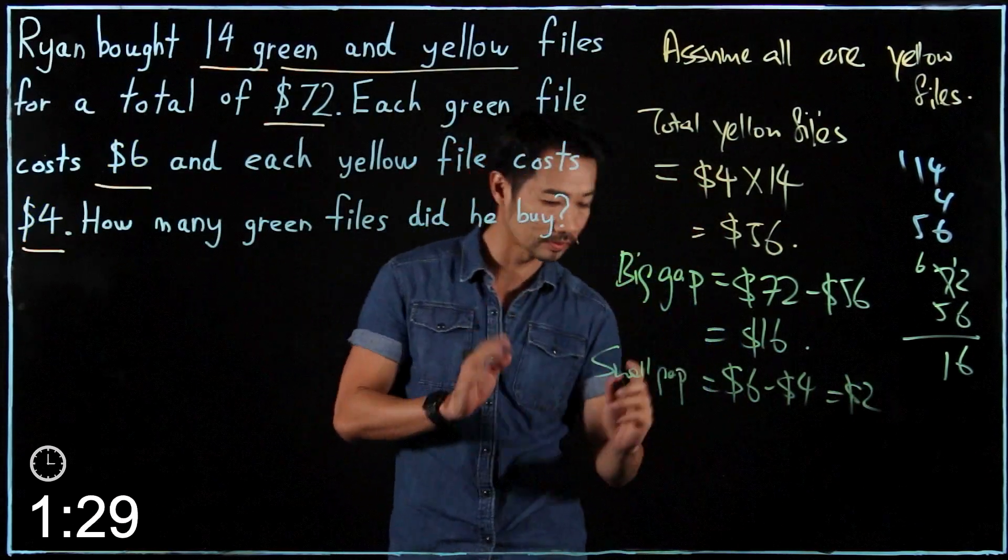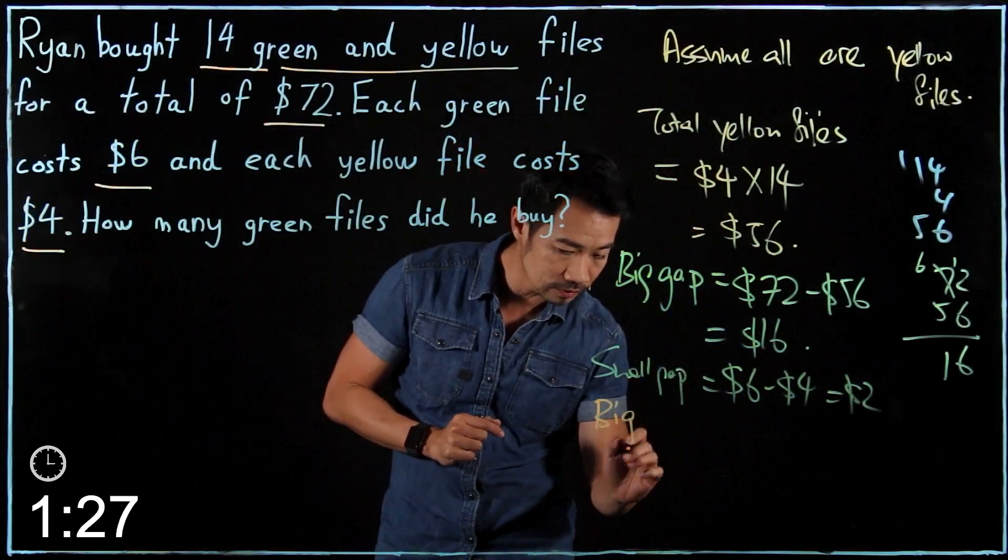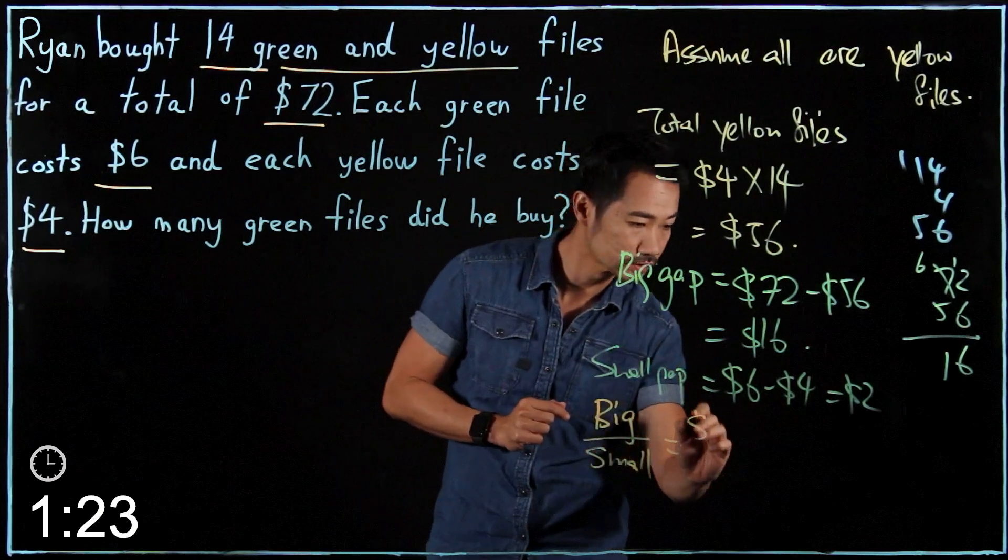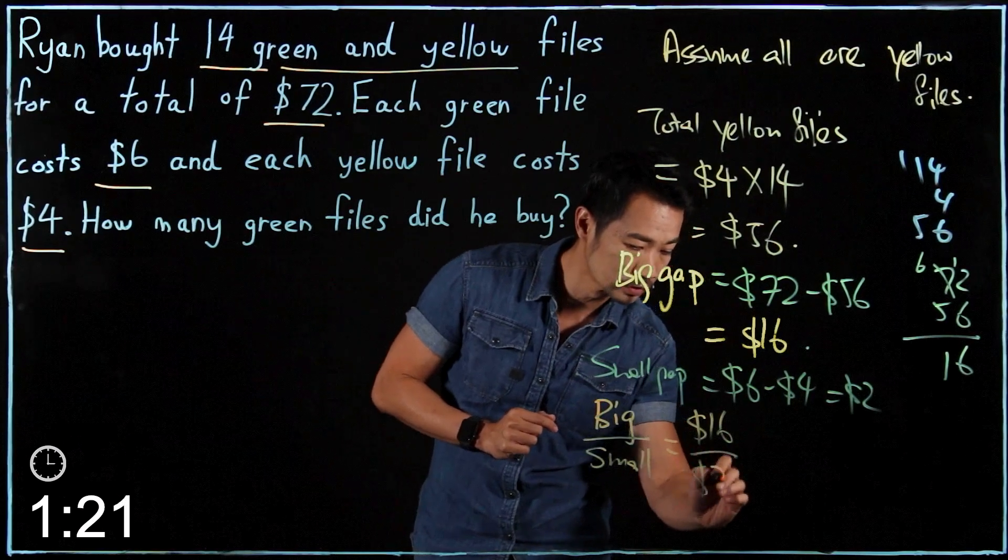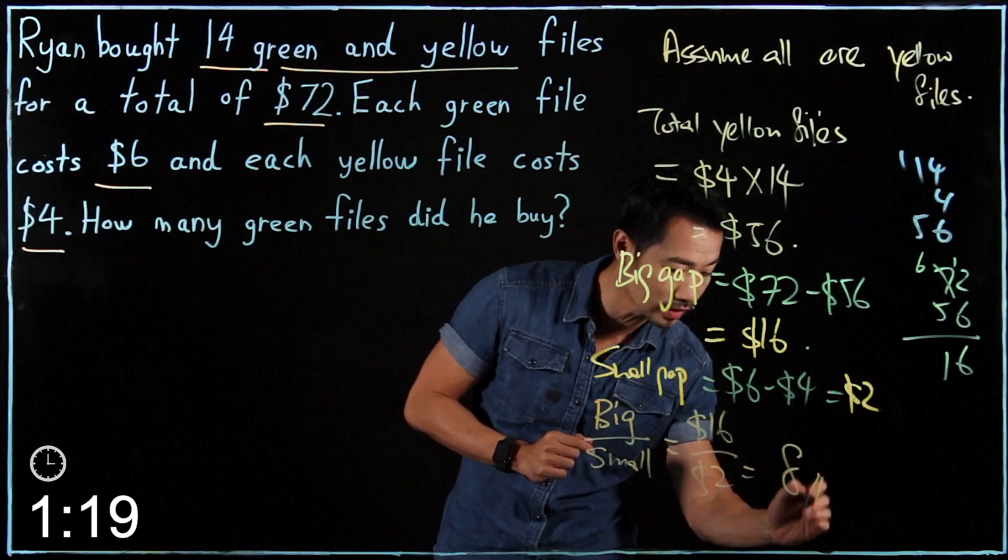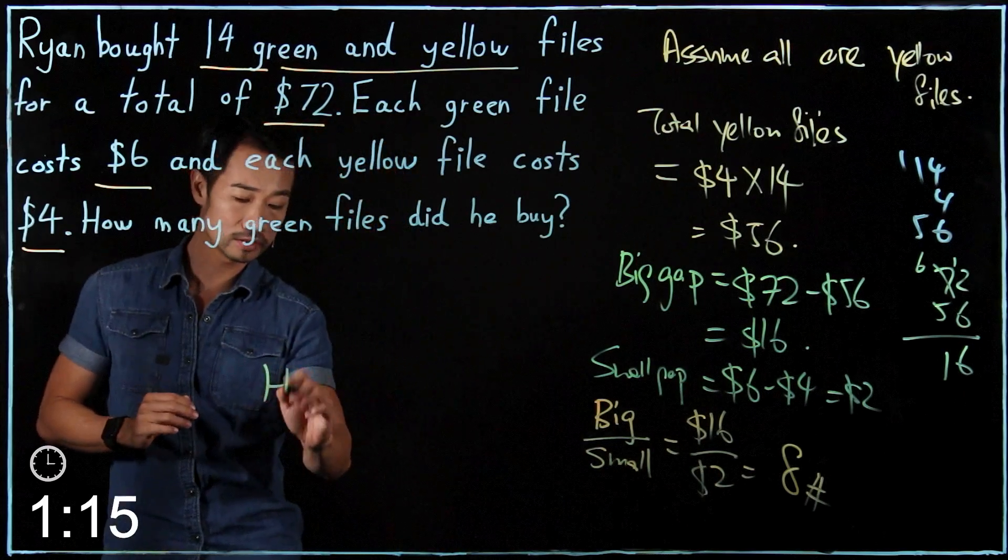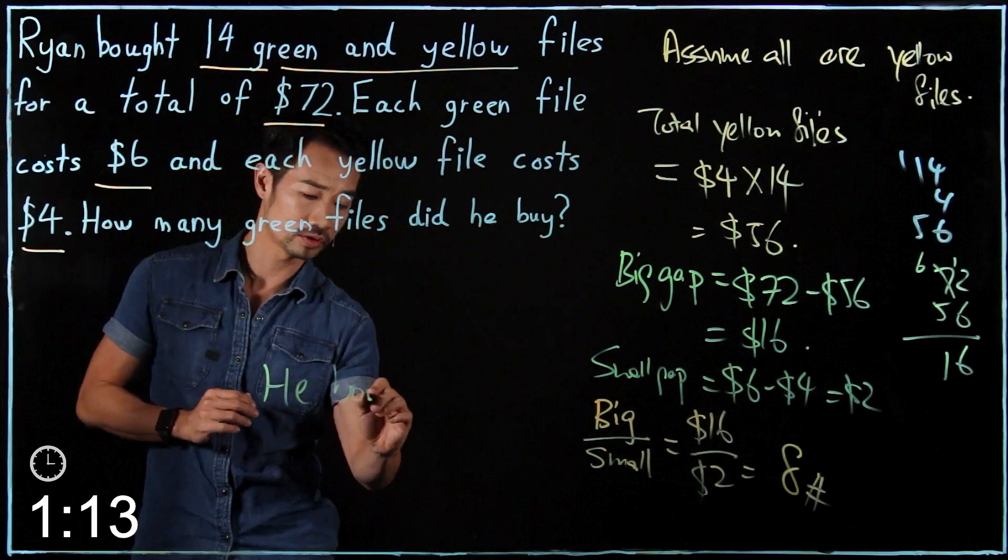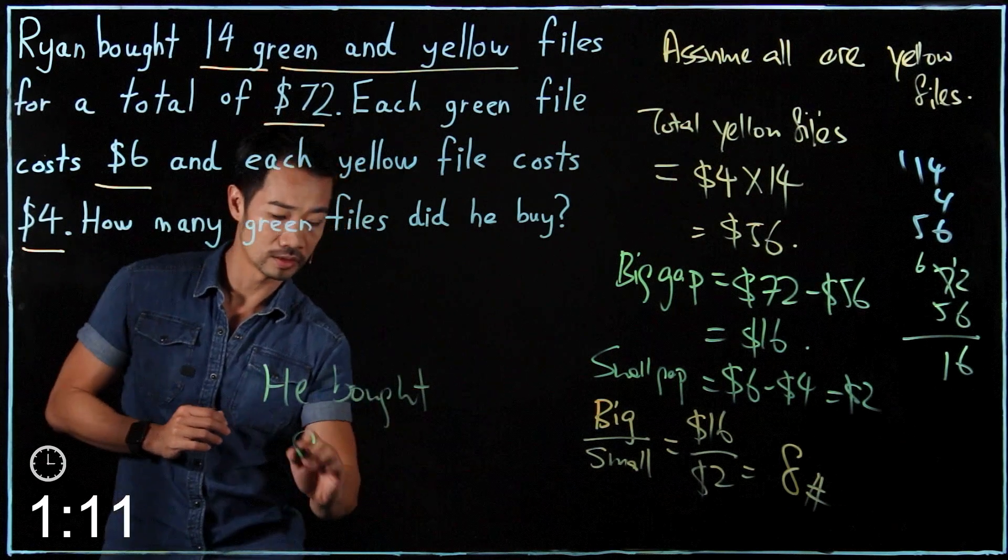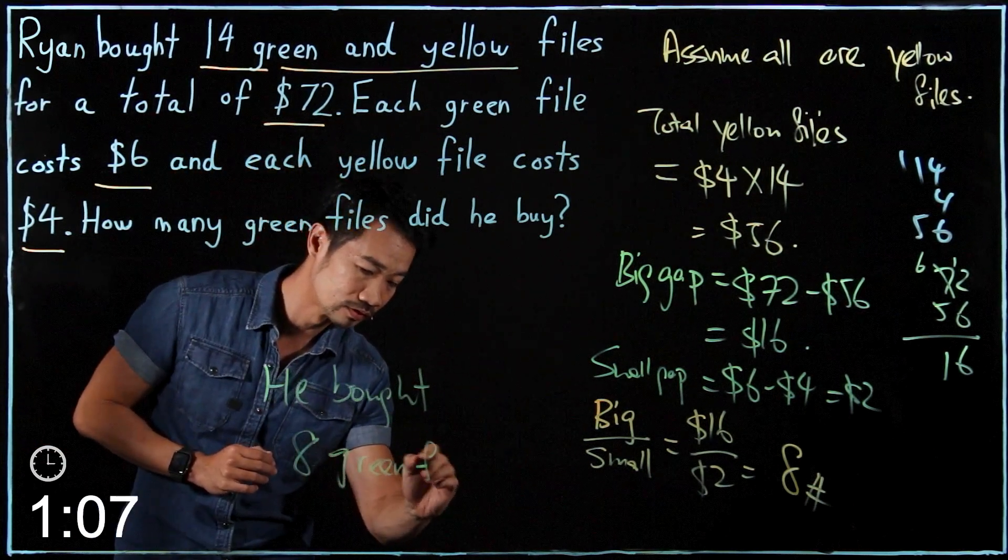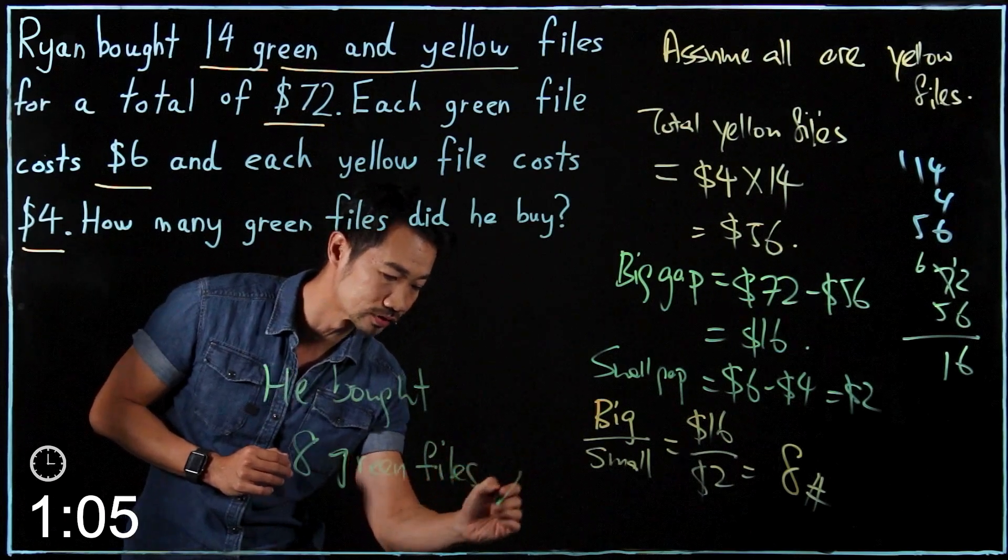Yes, take the big gap divided by small gap. So big divided by small, it will be 16 over 2 and I get 8. Yeah! I'm still in time. So he bought 8 green files.